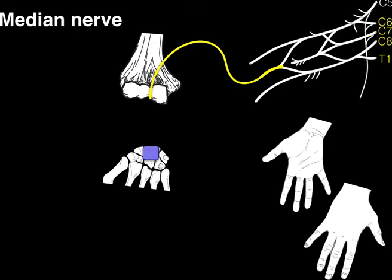At the elbow, the median nerve enters the forearm where it gives off many of its motor branches. As the median nerve continues, it gives rise to nerves that go to the pronator teres, flexor carpi radialis, palmaris longus, and flexor digitorum superficialis. It also gives rise to a nerve called the anterior interosseous nerve, or AIN for short.